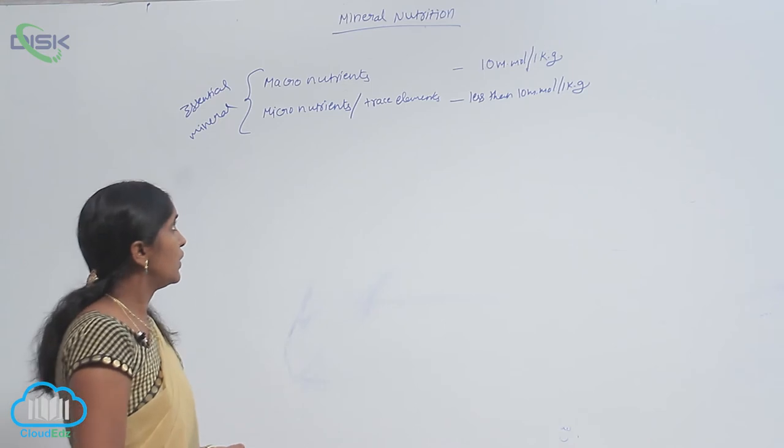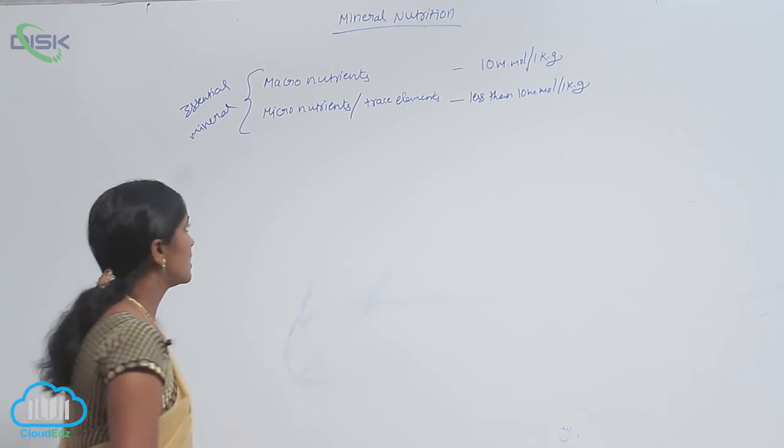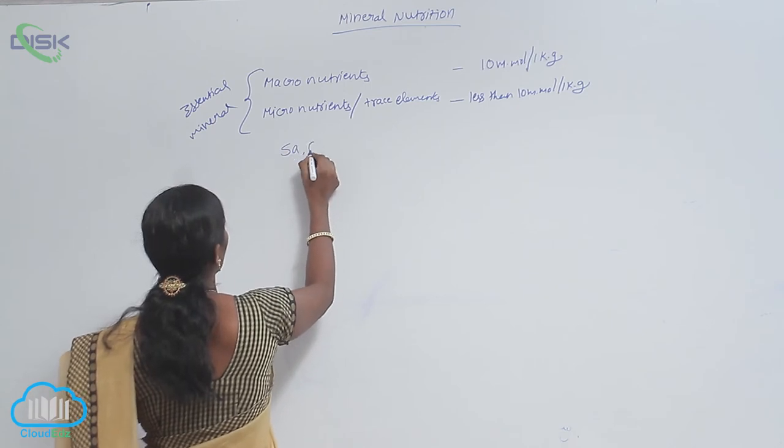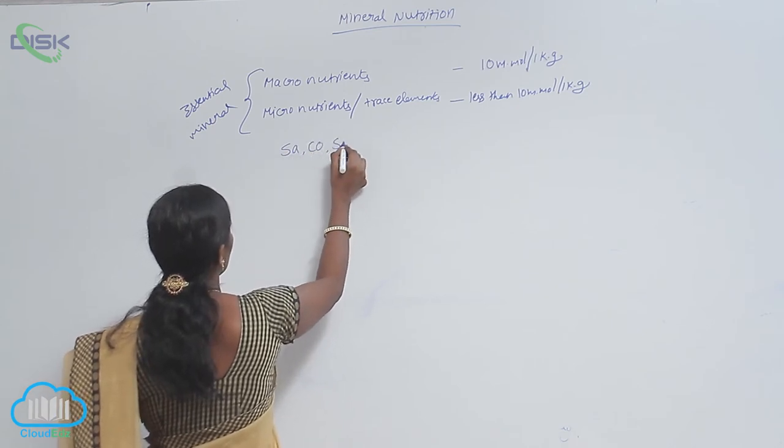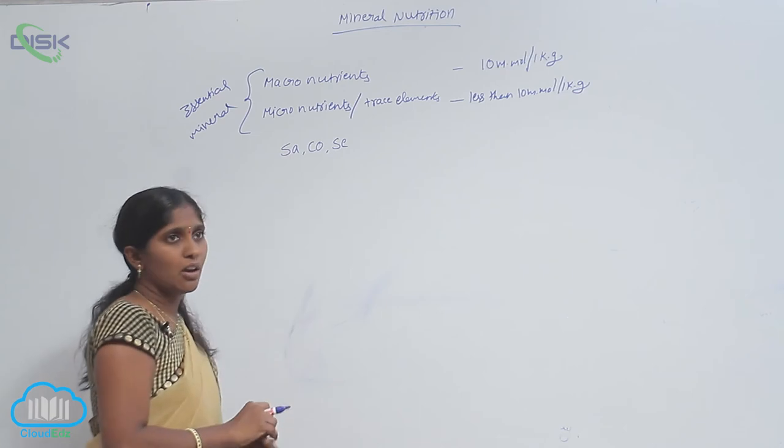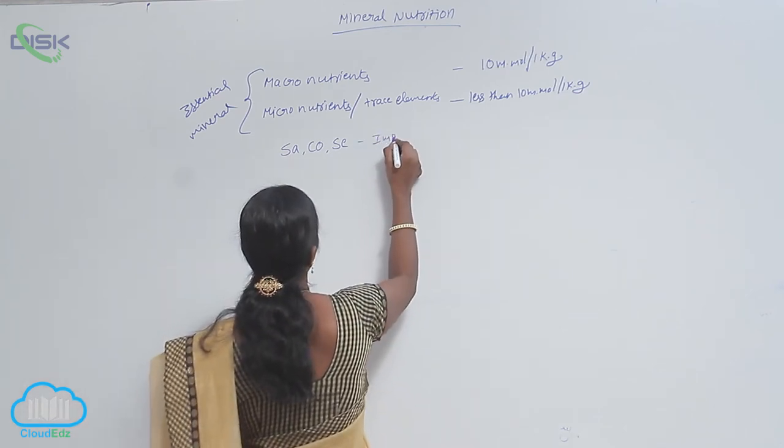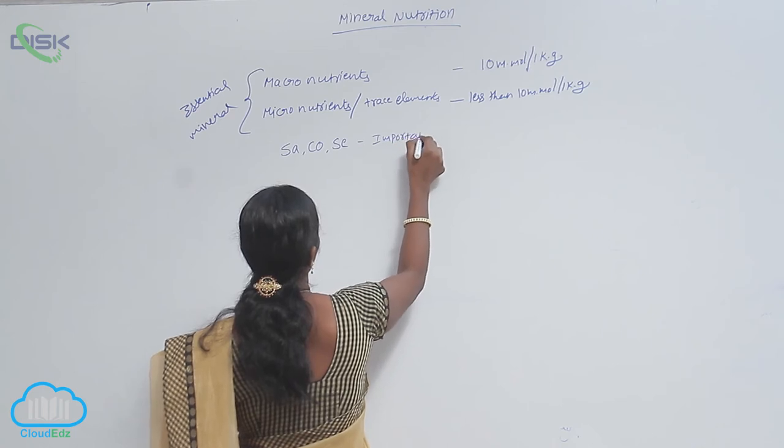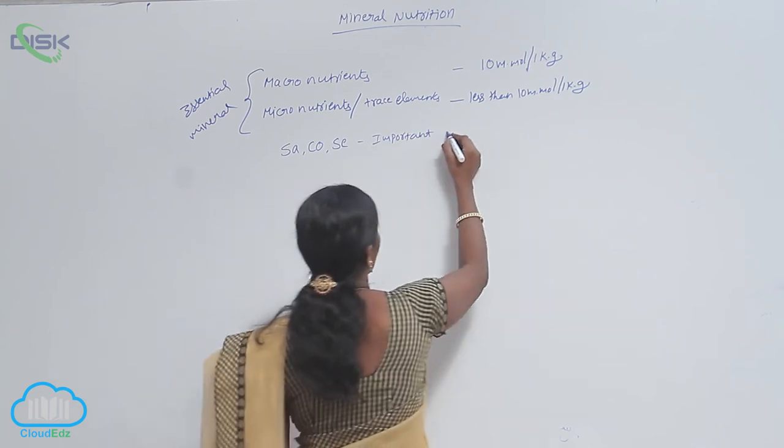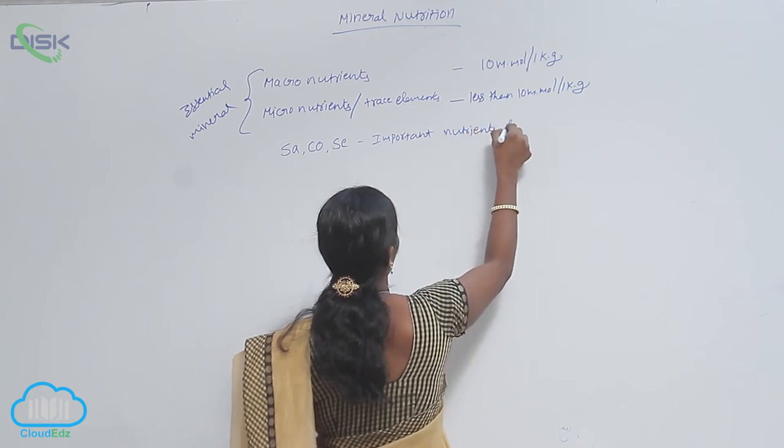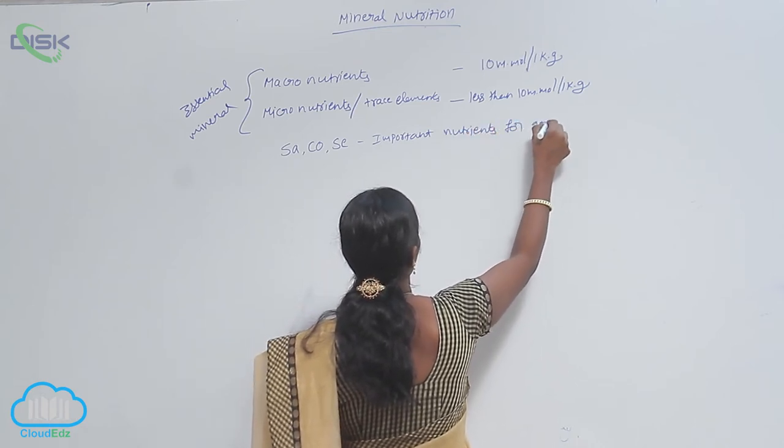Along with these nutrients, sodium, cobalt, and selenium also act as important nutrients for growth of the plant.